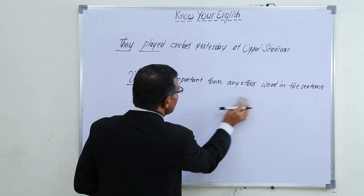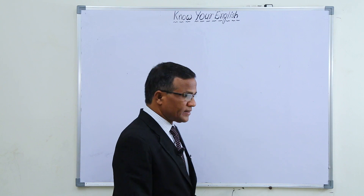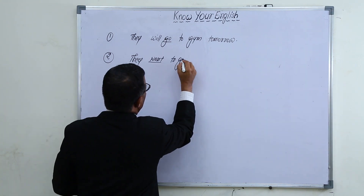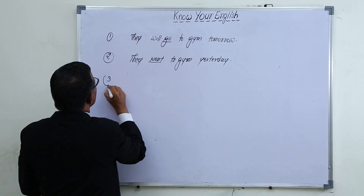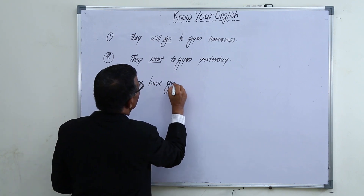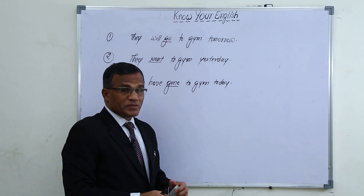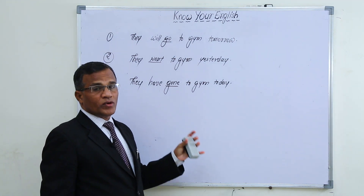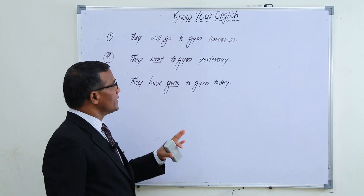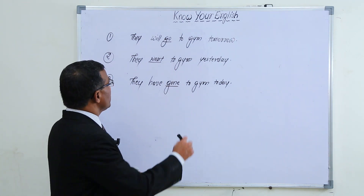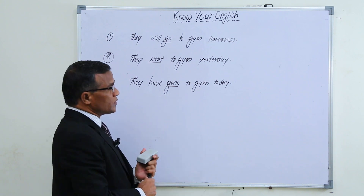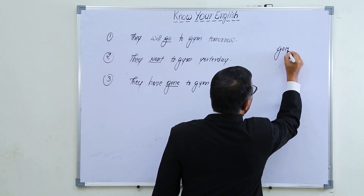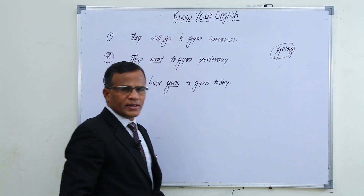Now let us observe the following sentences. First: 'They will go to the gym tomorrow.' Second: 'They went to the gym yesterday.' Third: 'They have gone to the gym today.' We have already talked about how verb is more important than any other word. Now let us pay attention to the verb in these three sentences — all three are talking about going.